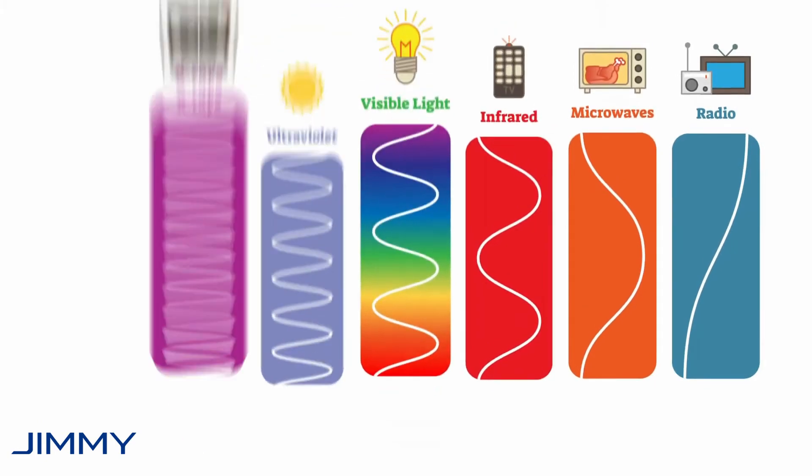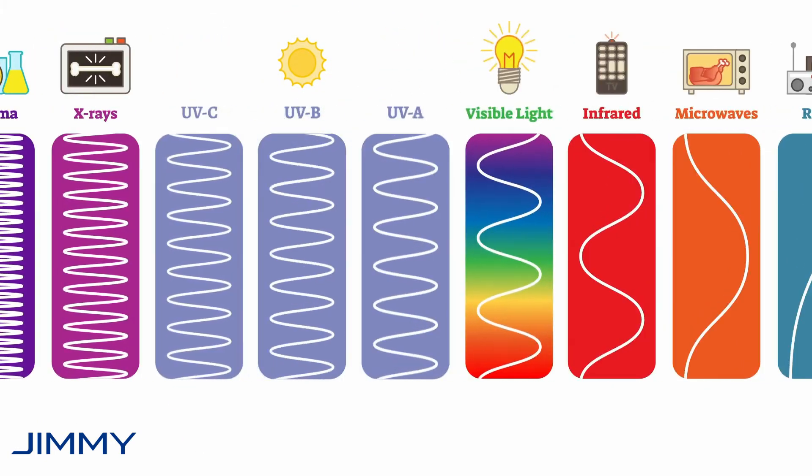Looking at the electromagnetic spectrum again and breaking out the three UV types, UVA and UVB can be used to kill bacteria, mold, and fungus.